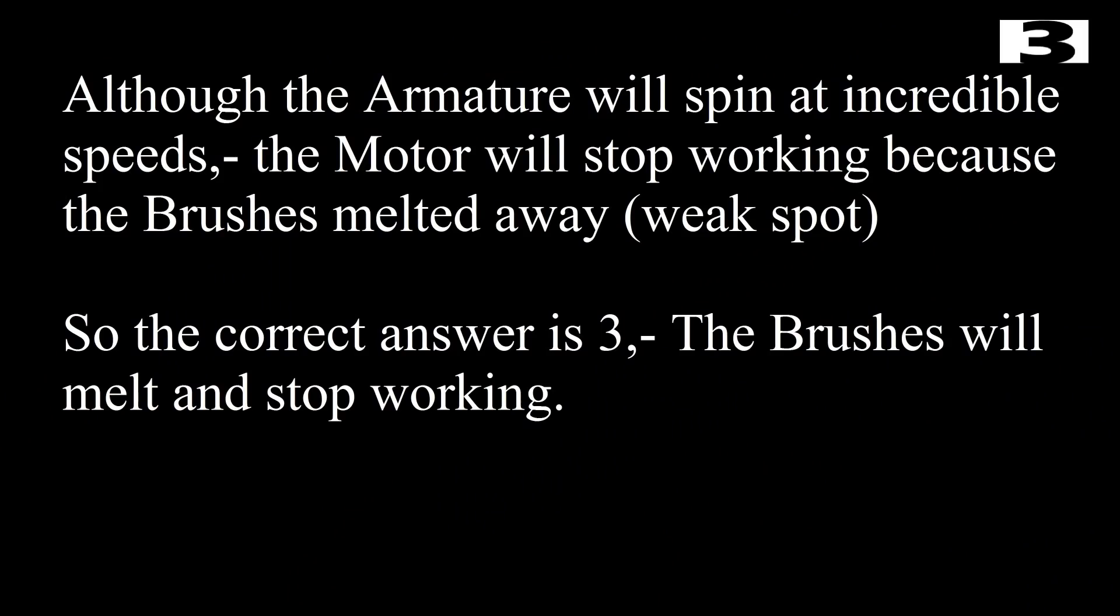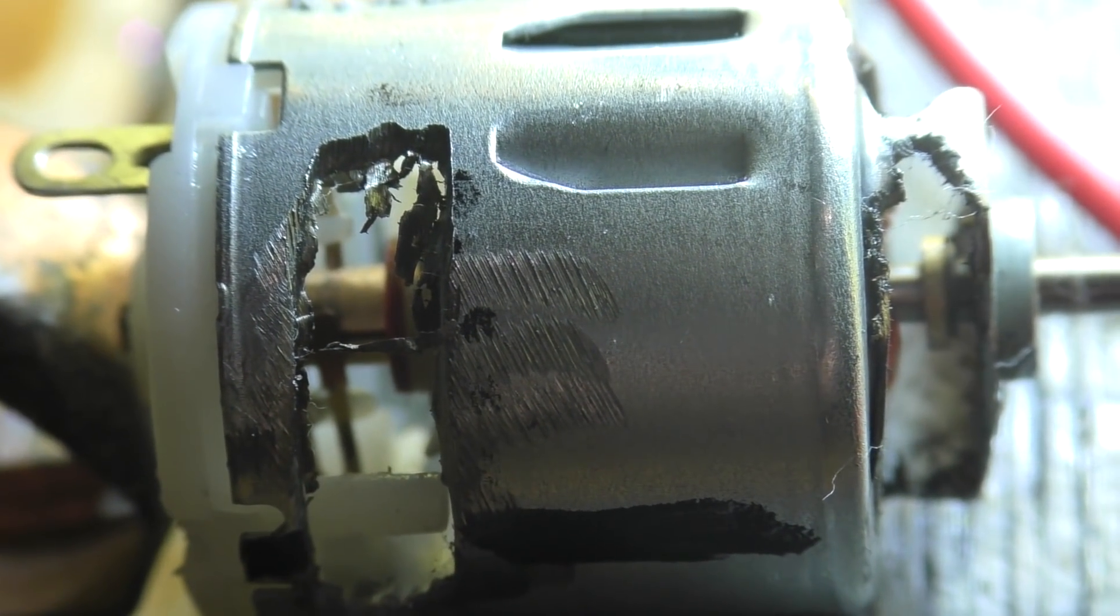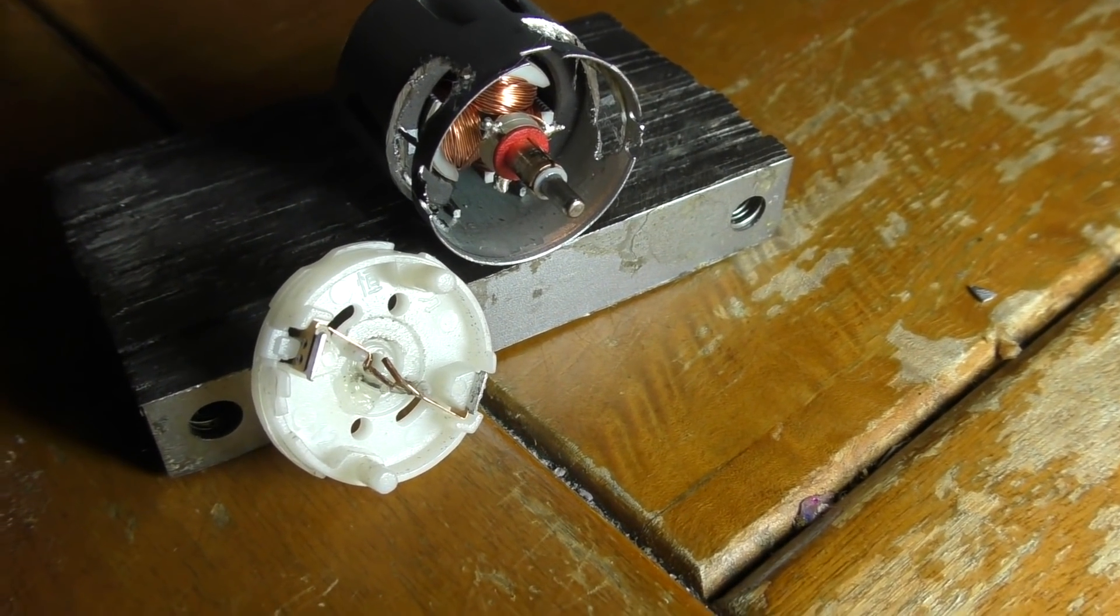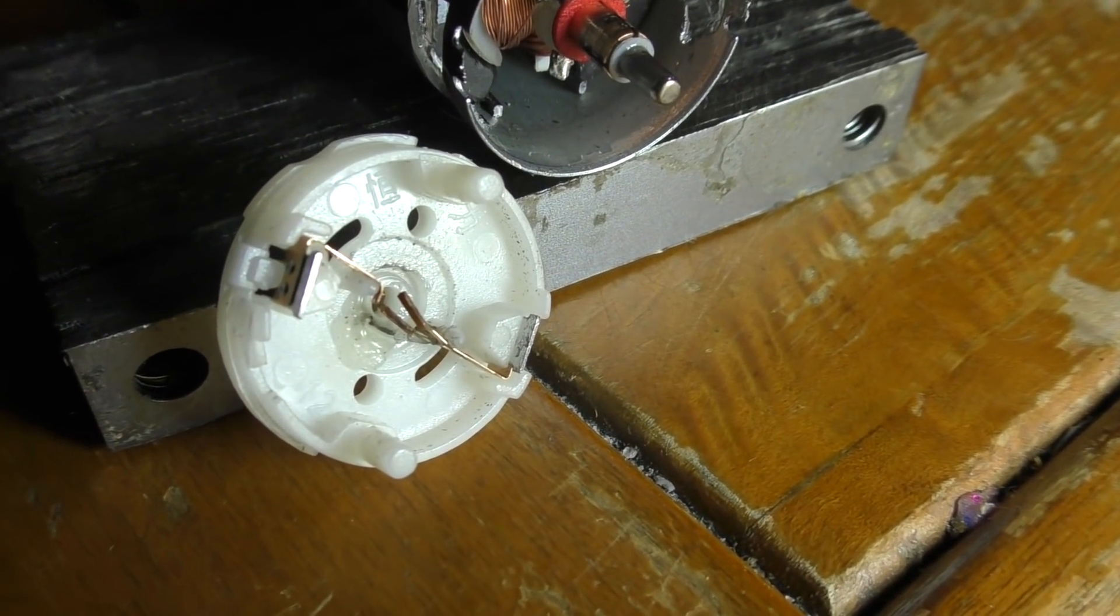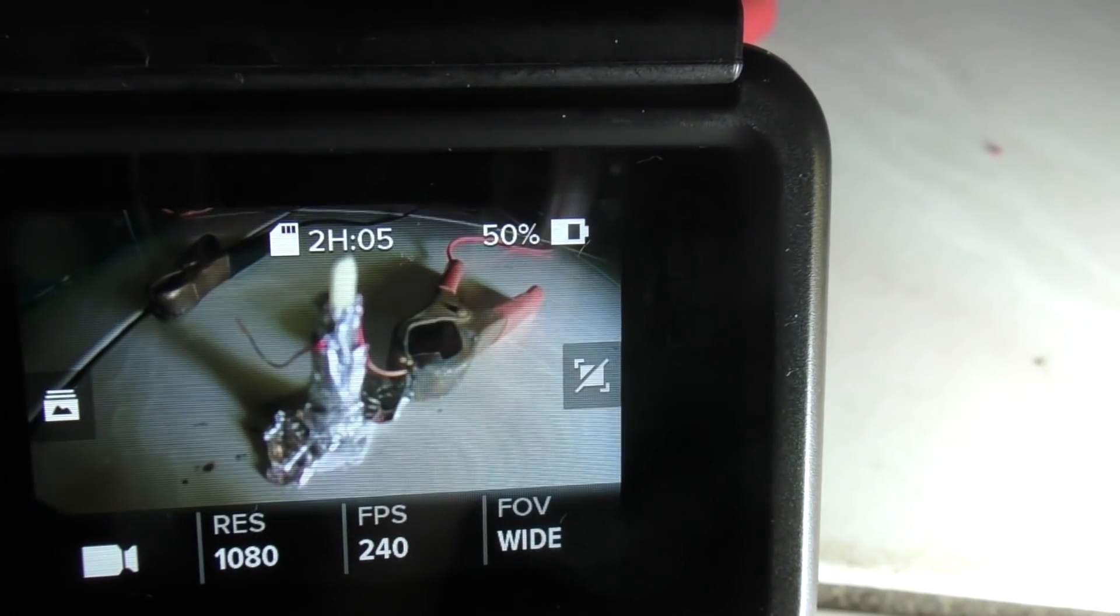The high voltage caused the motor to spin at super speeds. Apparently the brushes blew out. Let's have a look. Now the armature looks just fine, but one of those brushes looks like it's melted. Why did the brushes burn out?